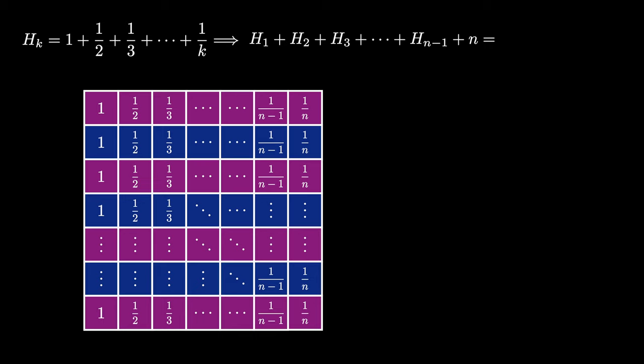Row 1 is h_n, row 2 is h_n, and so on. Each row sums to the value h sub n. But in this case there are n total rows, and therefore the sum of all the entries is given by n times h sub n.